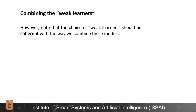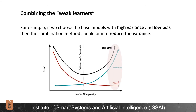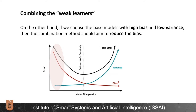Note that the choice of weak learners should be coherent with the way we combine these models. For example, if we choose base models with high variance and low bias, then the combination method should aim to reduce the variance. On the other hand, if we choose the base model with high bias and low variance, then the combination method should aim to reduce the bias.